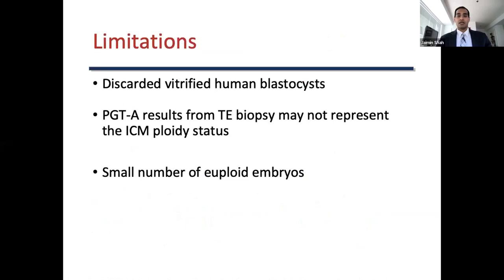Limitations to our study included: the use of discarded vitrified human embryos may differ significantly and metabolically from non-discarded human embryos; PGTA results from the trophectoderm biopsy may not accurately indicate the presence or absence of aneuploid cells in the inner cell mass; and blastocysts designated as aneuploid or euploid may contain varying populations of euploid and aneuploid cells. We also had a small number of euploid blastocysts, as euploid embryos are very rarely discarded, though we controlled for this imbalance with bootstrap resampling.